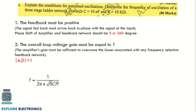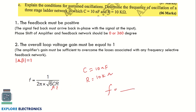The next question is a problem on oscillators. First, write the two conditions for sustained oscillation: feedback must be positive, and the overall loop voltage gain must be equal to one. Then calculate the oscillation frequency of a three-stage ladder network using the frequency expression, substituting C equal to 10 nanofarads and R equal to 10 kilohms. Solve for f and comment below with your answer.